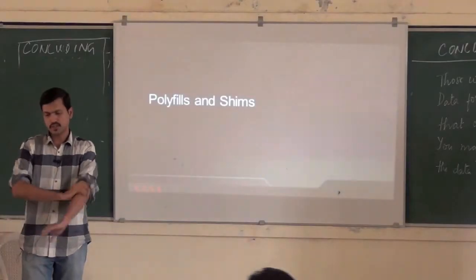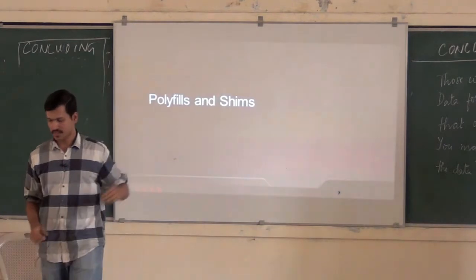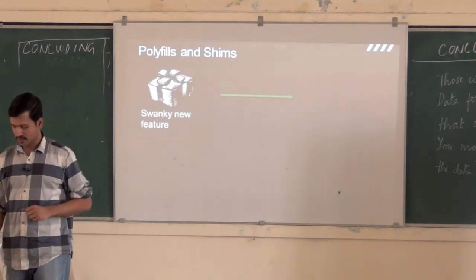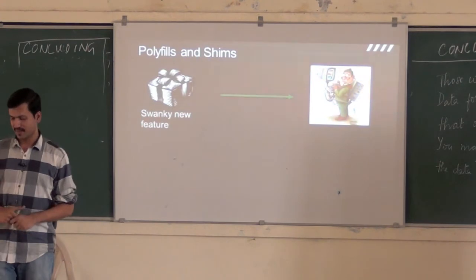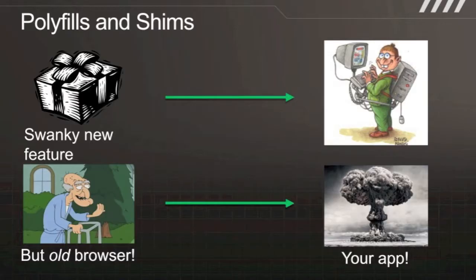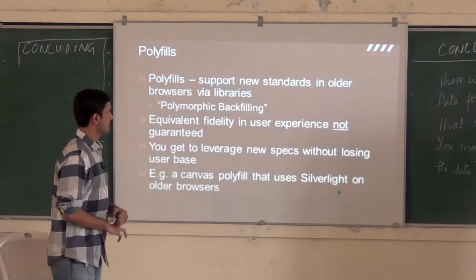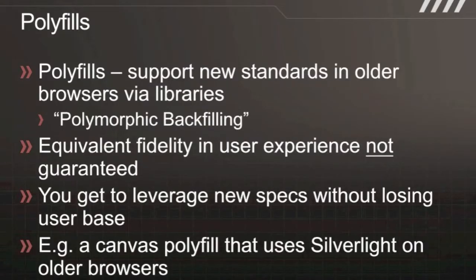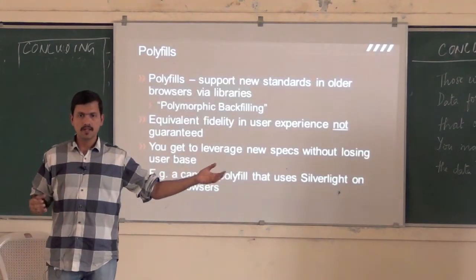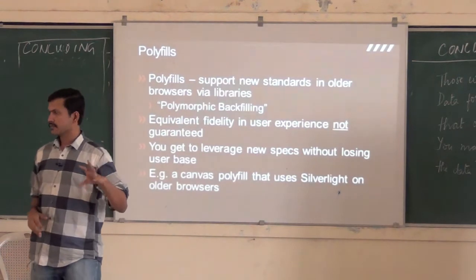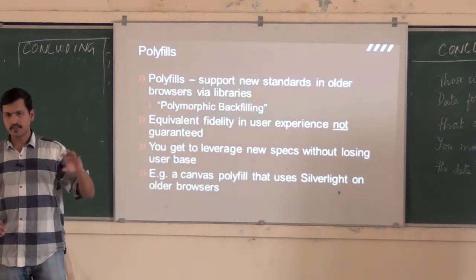With that, I'll quickly talk about polyfills and shims. This is what the problem is that it tries to solve — there is this shiny new feature in your browser, and you really want to implement it. But then along comes old browsers and things go nuclear. Polyfills are basically simple libraries — they could be JavaScript libraries that provide support for a particular W3C spec, and basically provide support for that in old browsers. The fidelity of the user experience may not be exactly the same — the best is if the browser supports that spec — but in case the browser doesn't support it, polyfills backfill that.